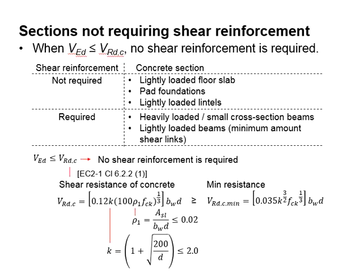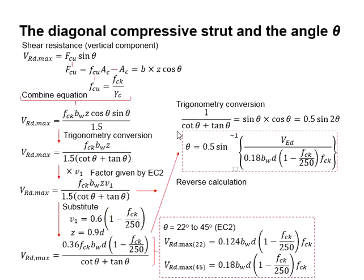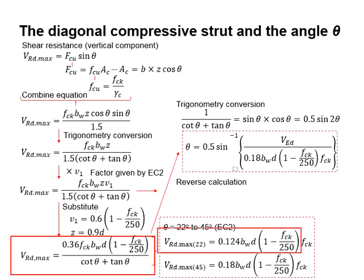Let us talk about the shear reinforcement in concrete members. There are a series of equations used to design for the shear resistance of concrete members. These include VRDC, VRDC minimum, VRD max, which is later derived into VRD max 22 degree and VRD max 45 degree.